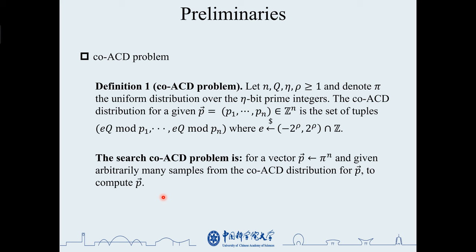Let us first introduce the definition of the search co-ACD problem. Let N, q, eta, rho be integers greater than 1. Eta is the length of pi, and rho is the length of error e.